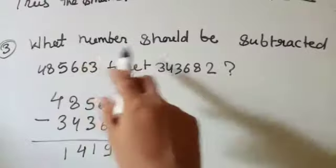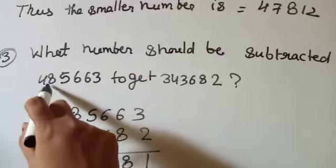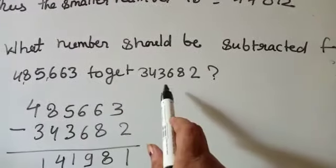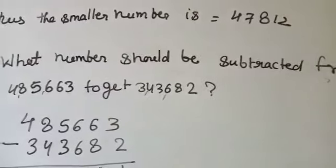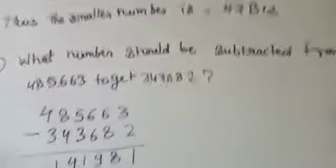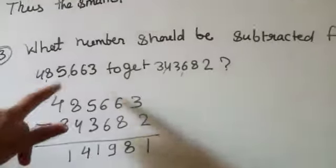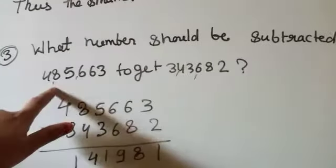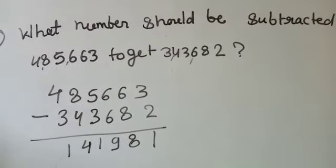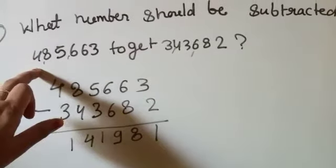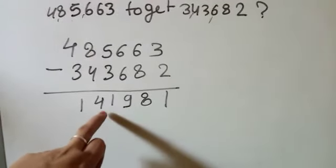Question 3: What number should we subtract from 4,85,663 to get 3,43,682? Subtracting, you will get 1,41,981. So the answer is 1,41,981.